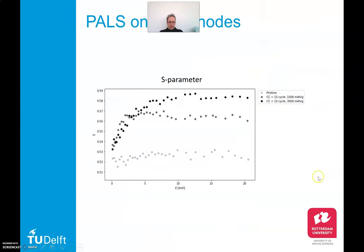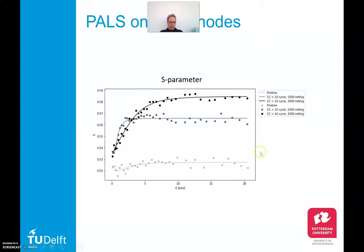Here you see a positron measurement on porous silicon anodes. We have the S-parameter — here is a pristine measurement of the pristine material with a certain S-parameter, and the S-parameter is changing when we change the cycling and the amount of capacity. With a capacity of 1000 we have a certain behavior of positrons in depth. With 3000 we have a much higher S-parameter in the bulk. We can plot that using VEPFIT, which is an accepted plotting program worldwide, and VEPFIT gives us the fitting results showing the behavior of the positrons in the material.